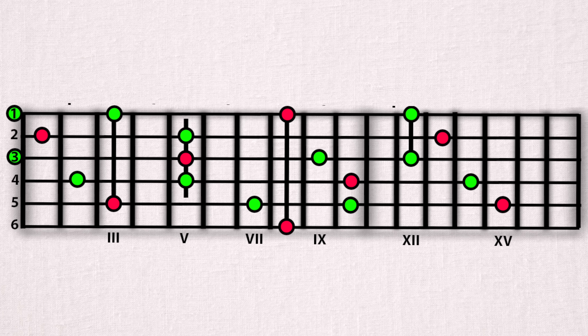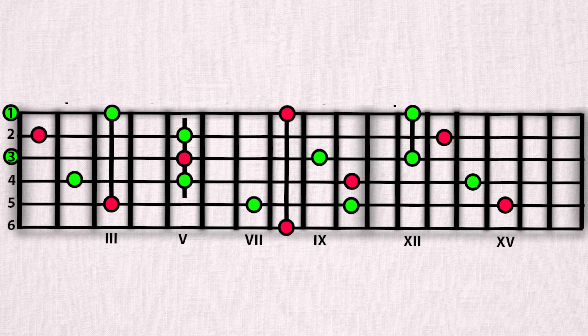The CAGED system is such an incredible tool for understanding chords, chord shapes, arpeggios and scales. It's also a system that will help you map out the fretboard in five unique sections. It's a topic that brings up a lot of questions, so let's just break it down step by step.